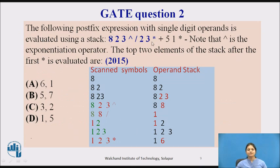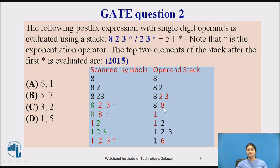The expression to evaluate is: 8 2 3 ^ / 2 3 * ... We need to find the answer up to the first multiplication. First, 8 is an operand — push it. Then 2 is pushed, then 3 is pushed. Next we encounter the power operator: 2 raised to 3 equals 8, so that result 8 is pushed. The stack now contains 8 and 8.